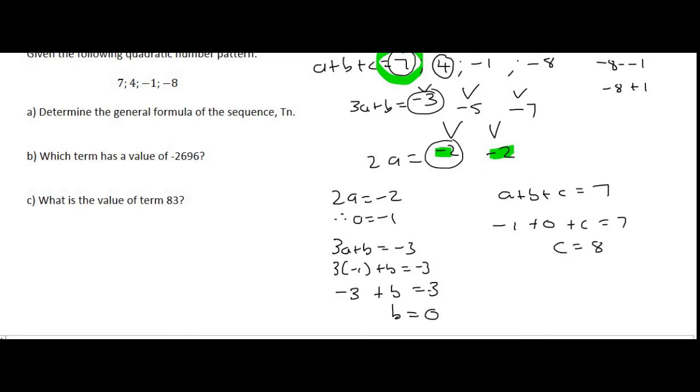Therefore, the final equation for that one will be TN is minus 1N squared. B is just 0, so I'm going to completely leave that one out. Plus C, which is 8. And so that's the first question complete.